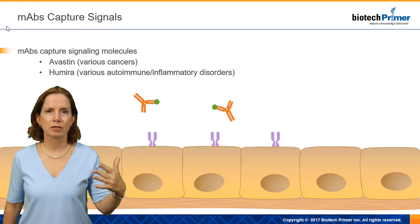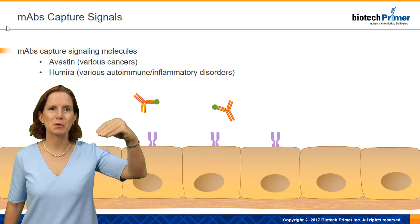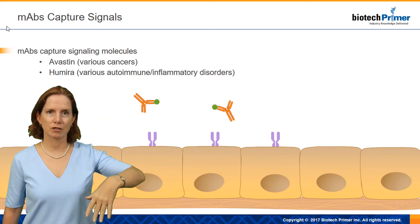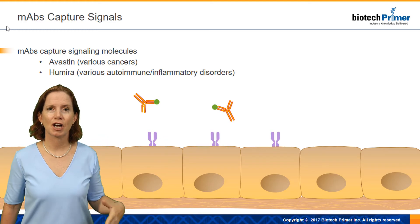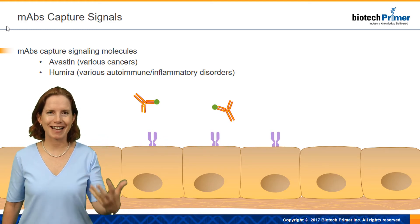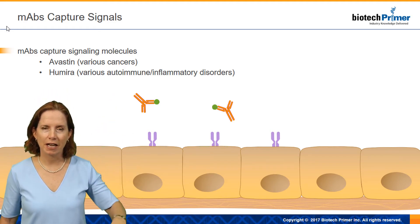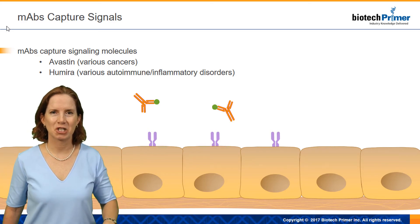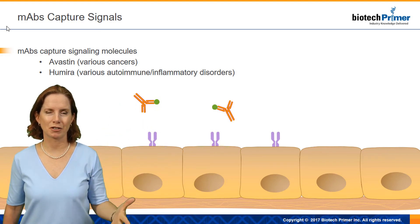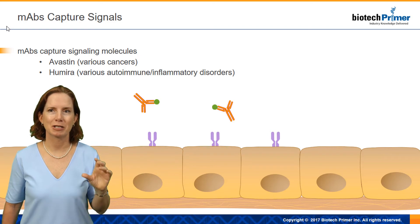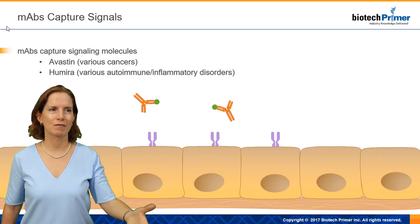Antibodies might also capture signals — for example, capture a growth factor signal and prevent it from reaching its receptor. In terms of anti-inflammatory disorders, our immune system is turned on by specific proteins called cytokines that bind to cell surface receptors of white blood cells and activate those white blood cells. In people with diseases like Crohn's disease or rheumatoid arthritis, those immune cells are too active and are actually attacking the patient's own tissues. So we want to modulate the activation of those white blood cells, and we can do that by capturing the signaling molecules that turn white blood cells on — which is what this slide shows.